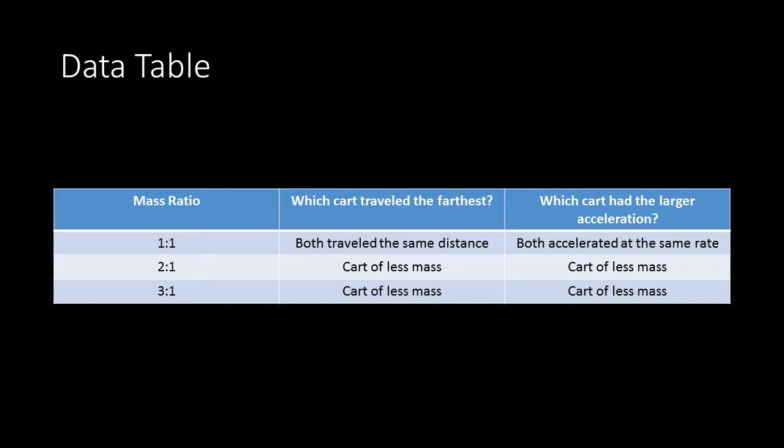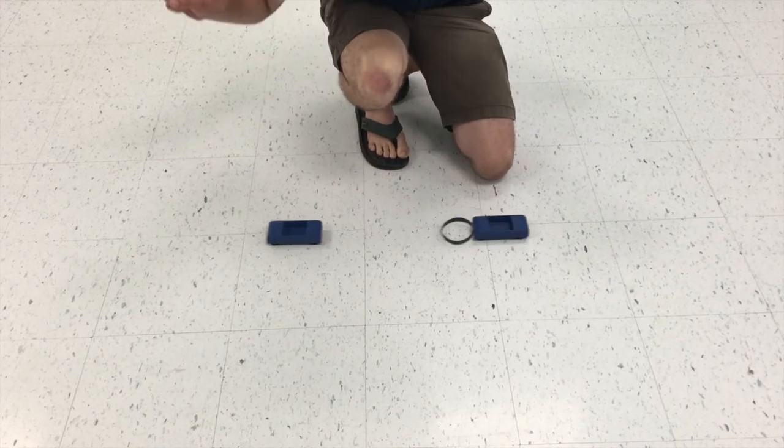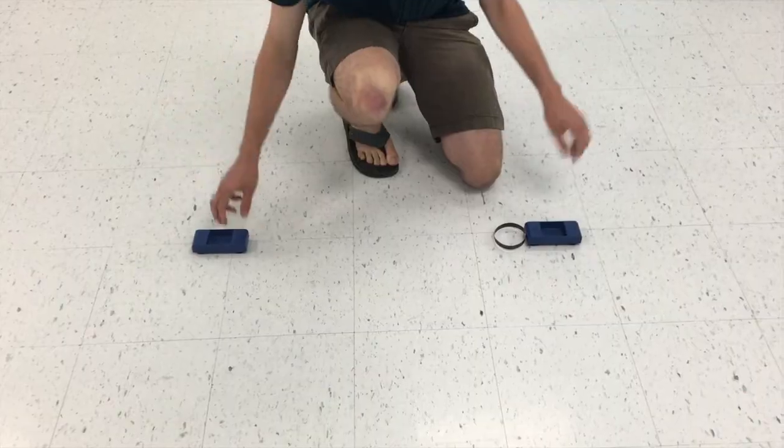What relationship can we make between the acceleration and the force between the spring and the cart? Write this down in your notebook — we'll return to this. Now let's look at what happens when we change the compression of the spring between the two carts, but keep the mass the same. Let's start with a small compression.